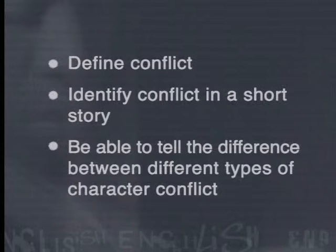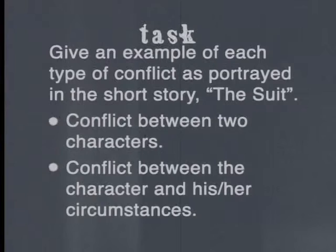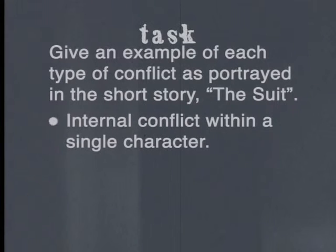Let's have another look at the outcomes of this lesson. You should now be able to define conflict, identify conflict in a short story, and be able to tell the difference between the different types of character conflict. In this lesson, we learned that there are three types of conflict in literature: conflict can refer to disagreement, differences, or confrontation between two characters; the character and his or her circumstances; or within a single character. Your task is to give an example of each of these types of conflict as portrayed in The Suit. Remember that while we are all looking at The Suit as an example, you should be able to analyse conflict from any short story that you may read.